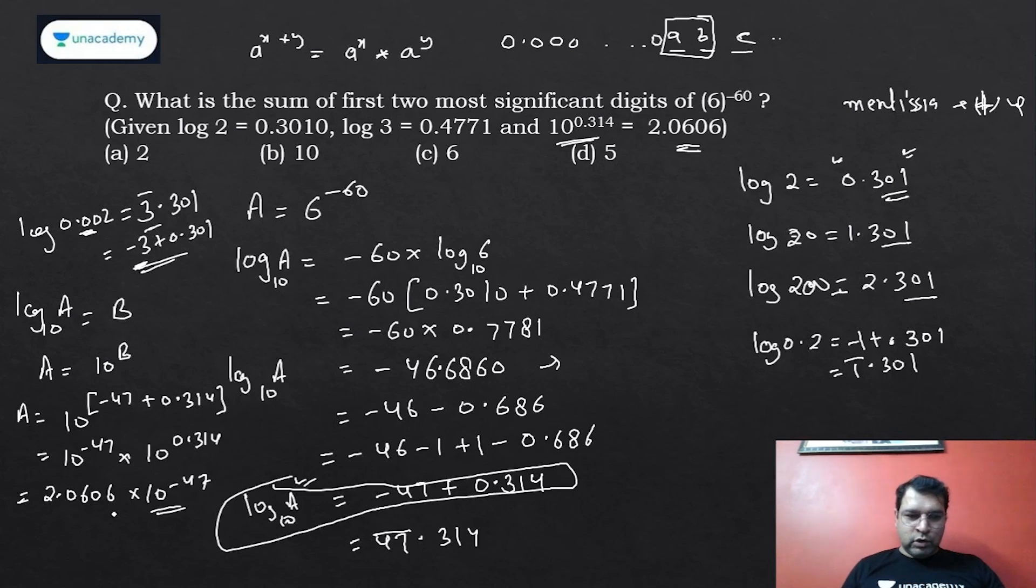This gives you 46 zeros, and then these decimals. So the value of A will come out as 0.00...00 (46 zeros), and after that these digits will come: 2, 0, 6, 0, 6.